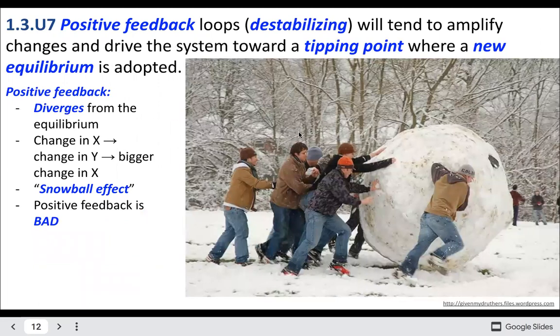A positive feedback loop is an initial change that continues to increase — a snowballing effect. Positive feedback loops are usually bad. For example, if you become hypothermic, you start to lose brain function and think you're warm, so you take off your clothes and get even colder, becoming even more hypothermic and closer to death. There's also lots of concern about positive feedbacks with climate change: as more ice melts, the ice reflects less sunlight, so the earth absorbs more sunlight and gets warmer, melting more ice, and so on.